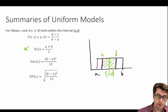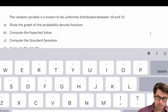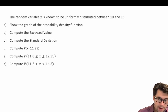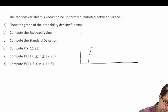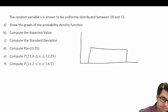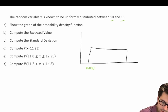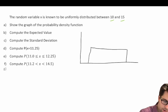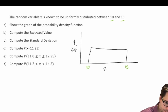Now let's do some practice problems. A random variable x is known to be uniformly distributed between 10 and 15. First, show the graph of the probability density function. The graph is going to look like a rectangle, since we have a uniform distribution between the values of 10 and 15. So a equals 10 and b equals 15, which we place on the axis with labels for x and f(x).